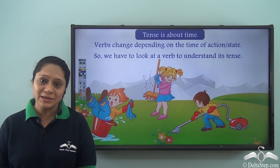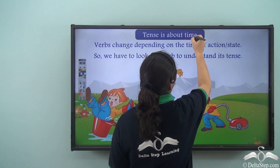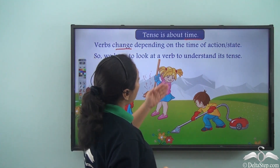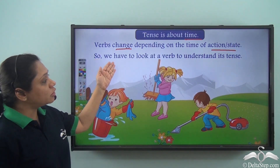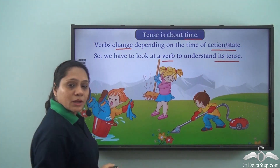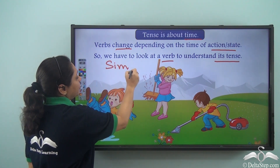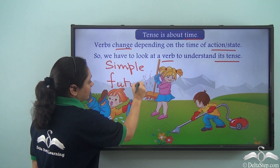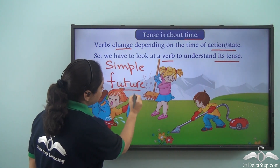We have learnt about tenses and we know that tense is about time — verbs change depending on the time of action or state, so we have to look at a verb to understand its tense. You have already learnt about the simple future tense; today we learn a little bit more about the future tense.